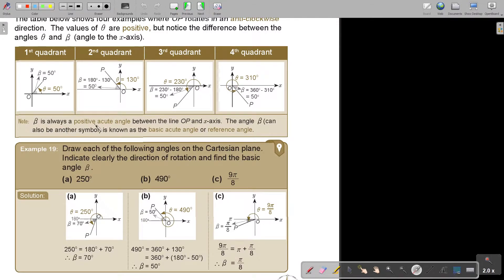So beta is always a positive acute angle between the line OP and the X axis, the shortest road to that. The angle beta can also use another symbol. It's known as the basic acute angle or reference angle. So that's why I called it beta.